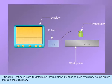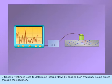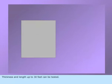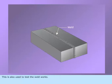Ultrasonic testing is used to determine internal flaws by passing high frequency sound pulses through the specimen. Thickness and length up to 30 feet can be tested. This is also used to test the weld works.